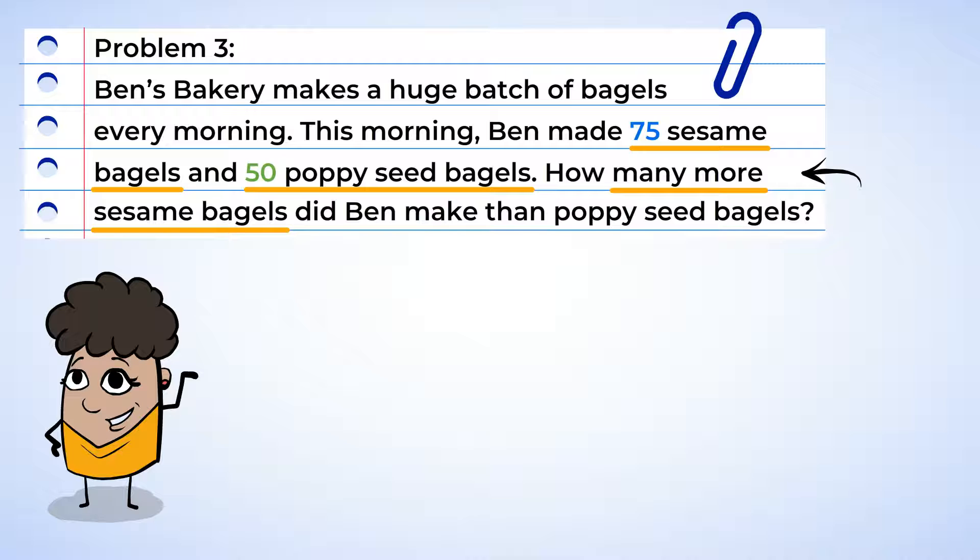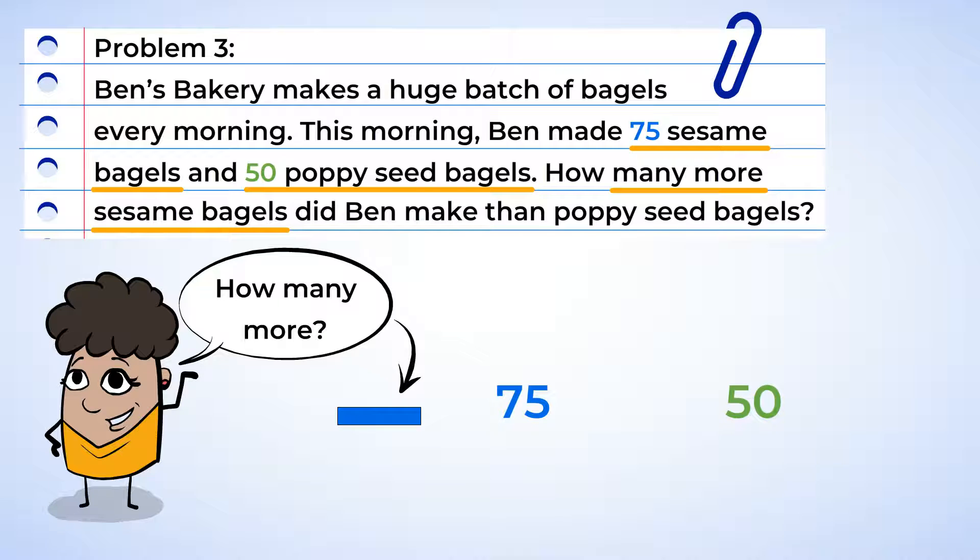Let's start with looking at the question. Then we can draw a model. The question asks us, how many more? And we have the numbers 75 and 50. Can I find any clue words in the story? Yes. How many more is subtraction. Now let's draw it out to make sure we're understanding correctly.